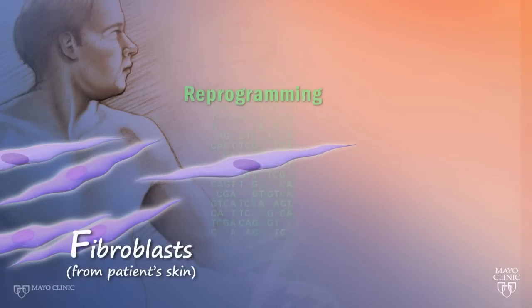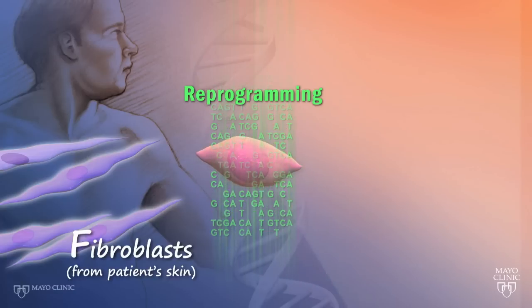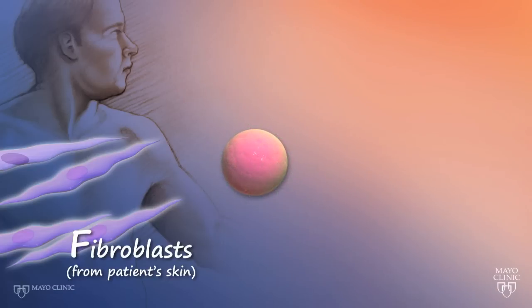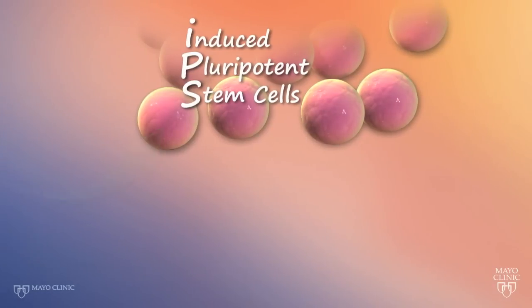The bioengineered stem cell functions just like an embryonic stem cell in that it can produce all of the adult body cell types. That means we can recreate virtually any tissue from an individual patient.